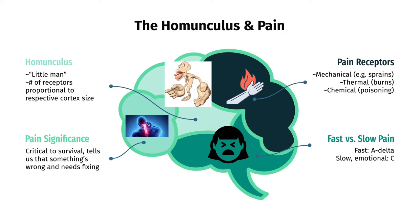Moving on to pain, or nociception, there are three types of receptors: mechanical, thermal, and chemical, which react to a variety of painful or noxious stimuli. There is fast pain, mediated by A-delta receptors, and slow or emotional pain, mediated by C-receptors. Pain is not pleasant, but it's critical to our survival, as it tells our body that something is wrong and we need to fix it.